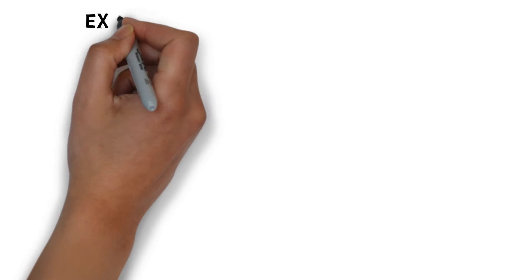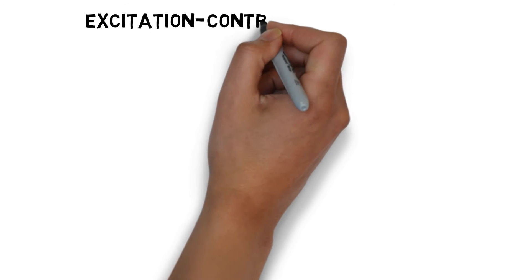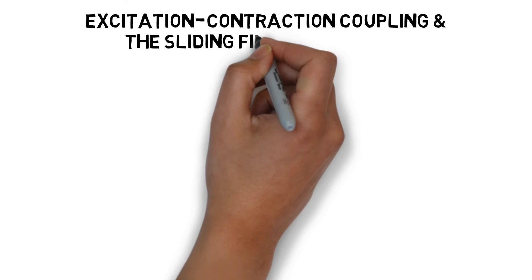The collective process of neural stimulation that results in a muscle contraction is called excitation-contraction coupling. This includes the proposed process involving muscular filaments, more commonly known as the sliding filament theory. Here are the key steps that occur leading up to a skeletal muscle contraction.